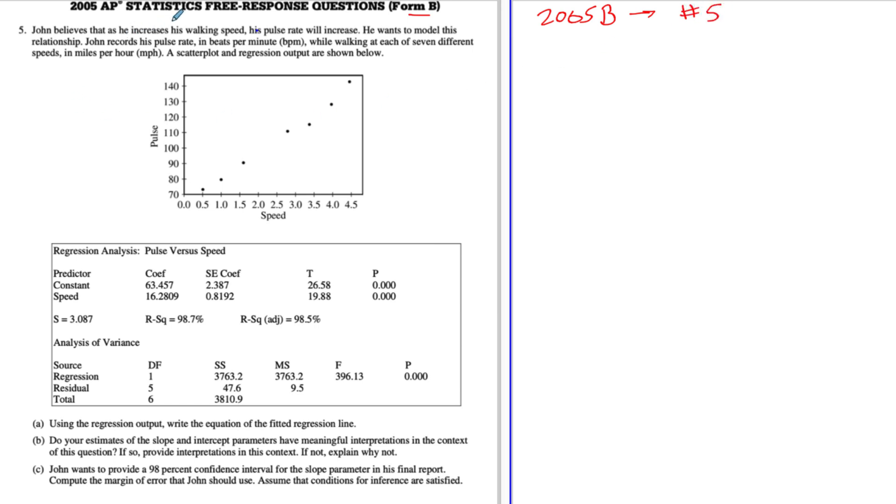So John believes that as he increases his walking speed, his pulse rate will increase. He wants to model the relationship, records his pulse rate in beats per minute while walking at seven different speeds in miles per hour. Here's the scatter plot and the regression output.